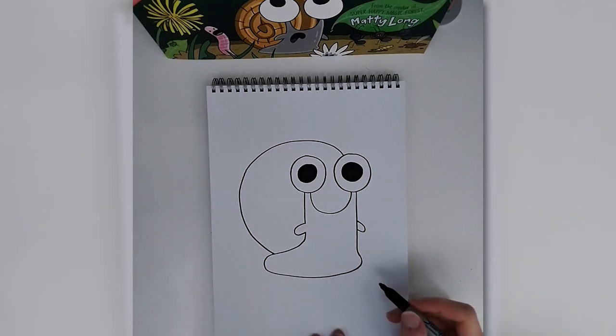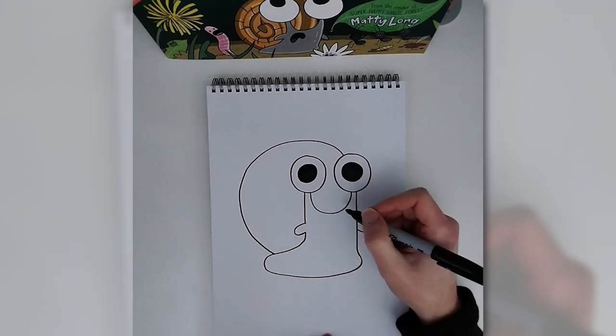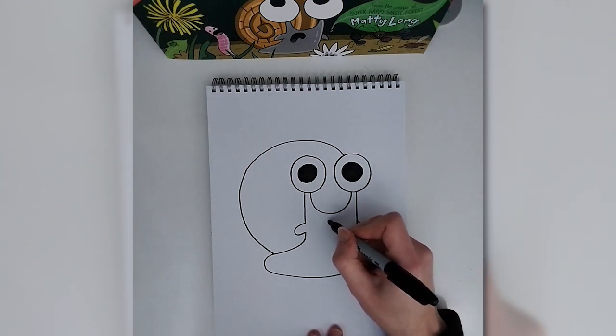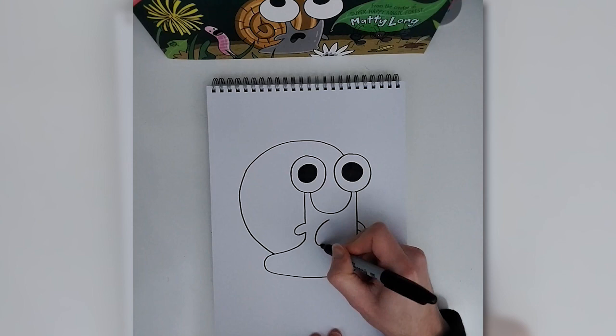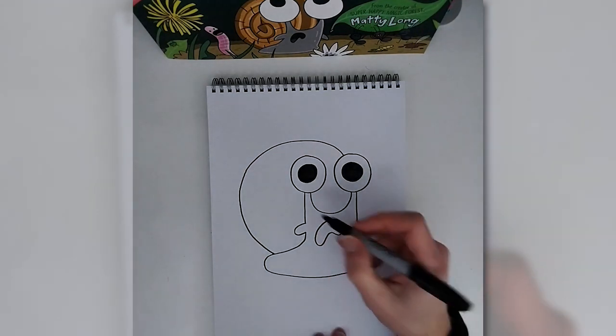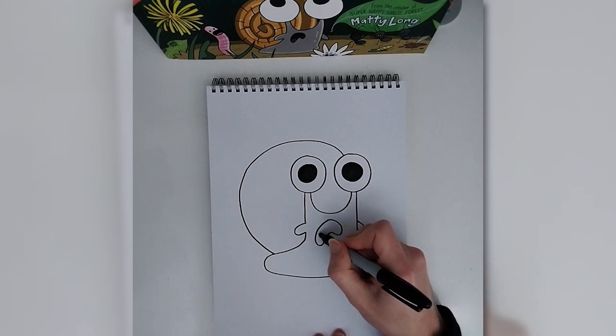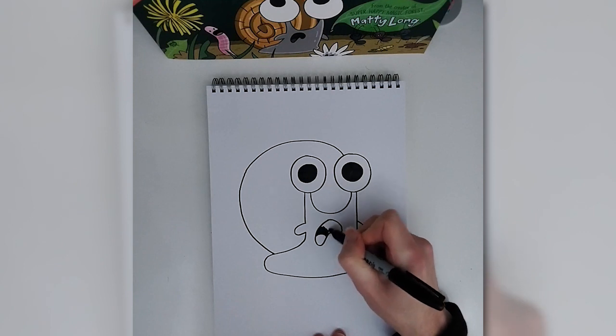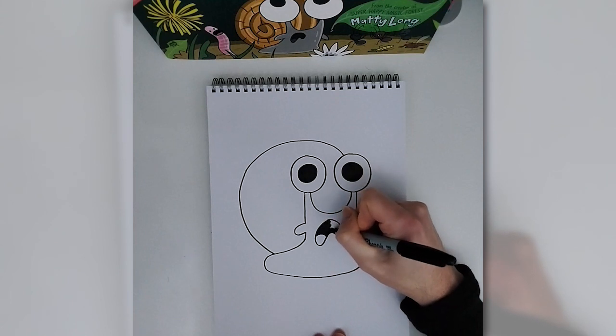Okay. Next, we're going to add snail's mouth. Now, we could do a sort of smiley face if we wanted, but given snail's constant state of shock in this book, I'm going to go with a sort of a jelly bean shape like that. Another little circular shape for the tongue. Again, not sure if snails have tongues. I'm going to guess no, but given how often snail's mouth was open in this book, it made sense to add one.